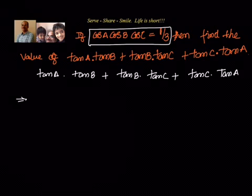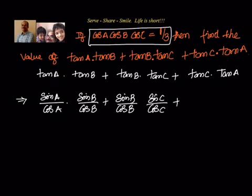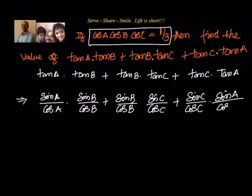Let us try to convert that into sin and cos. We will write tan A as sin A by cos A. Similarly, tan B is sin B by cos B, and tan C is sin C by cos C. We multiply out the three pairwise products accordingly. In the next step, we will try to take the LCM of all of this.